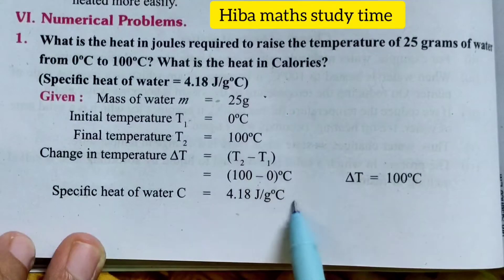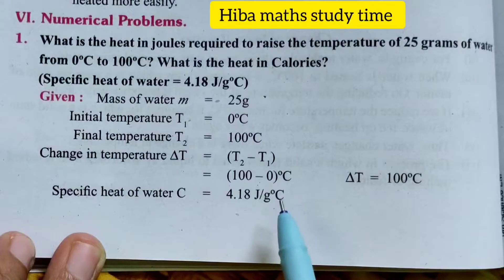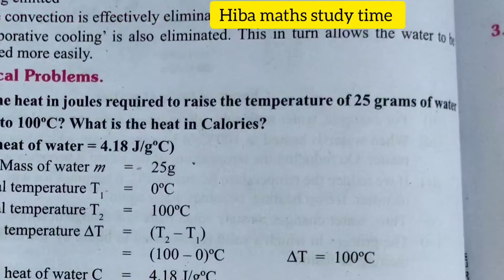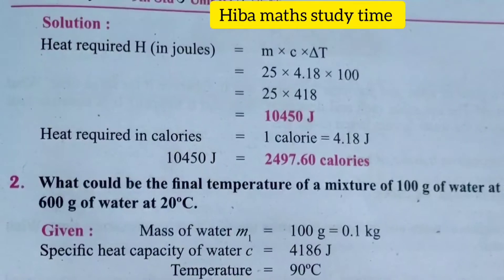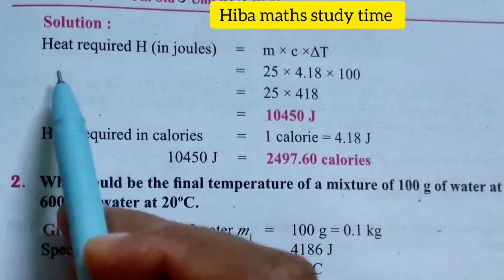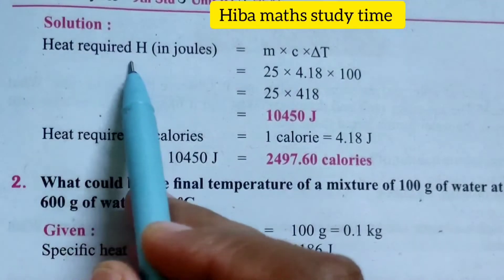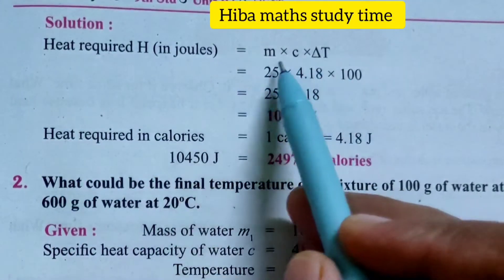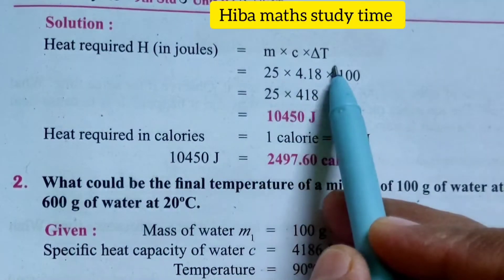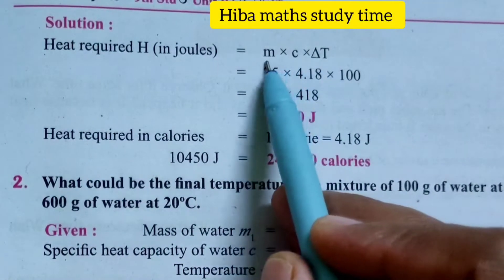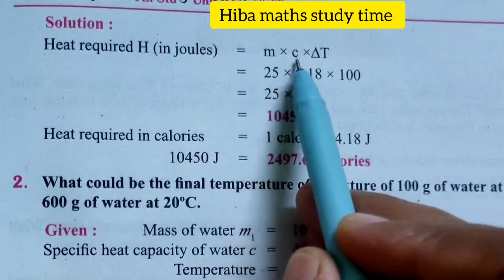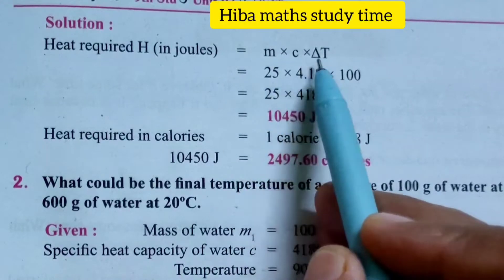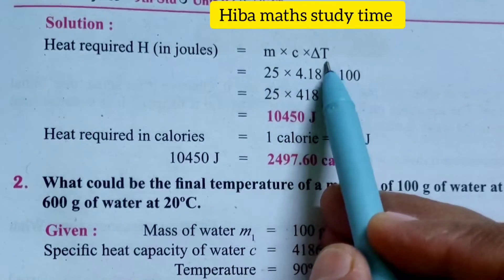This is all the given data. Let's look at the solution. The heat required H in joules is equal to the formula: mass m multiplied by specific heat c multiplied by change in temperature delta T.